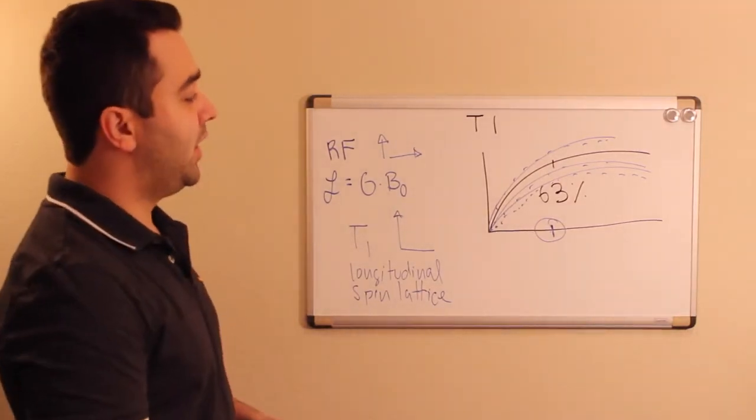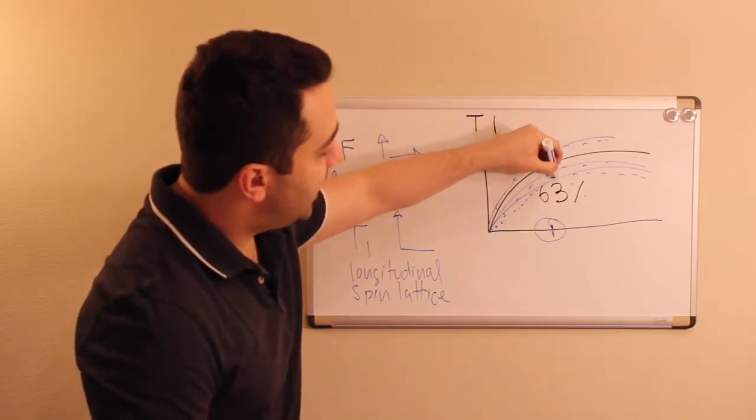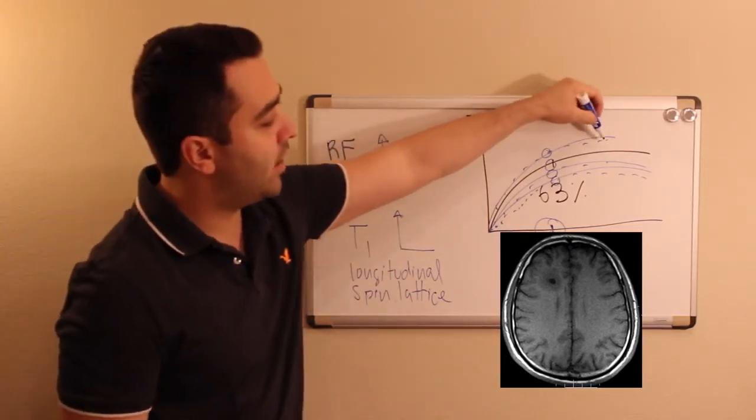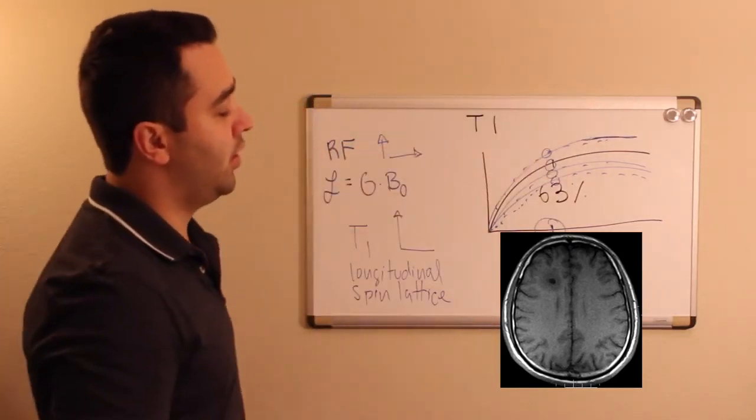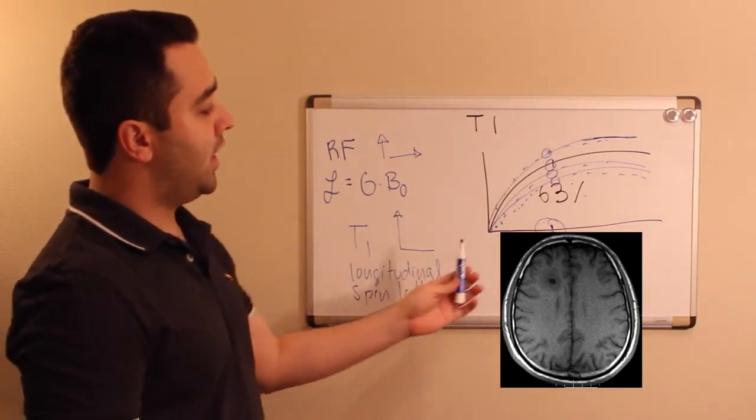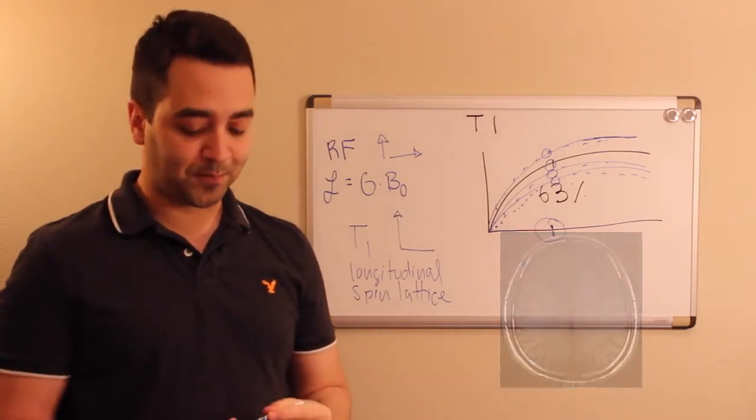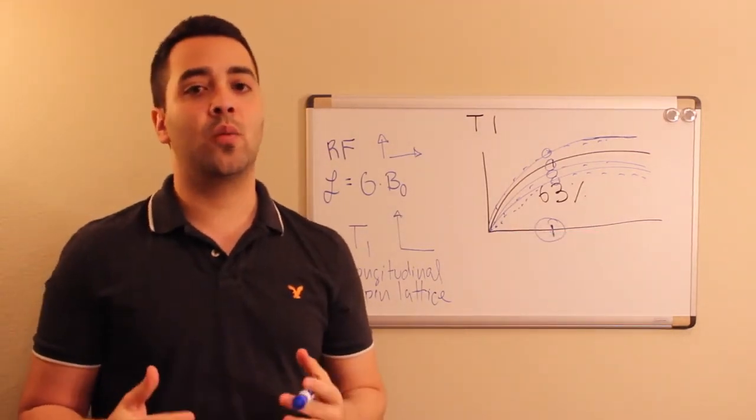What that allows me is to detect differences in recovery between different tissues and that creates an image. In theory the higher up they are here the whiter they're going to appear on the MR images and the lower they are the darker they're going to appear on the MR images and that really explains the basics of T1 weighted imaging.